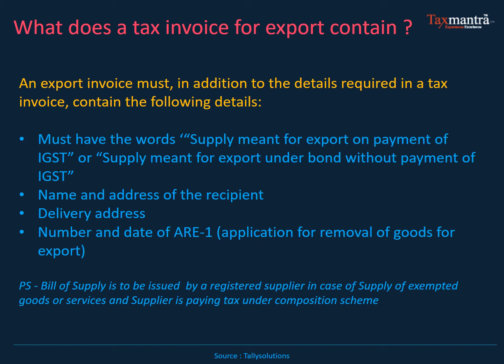For export invoices, the tax invoice must have the words 'supply for export on payment of IGST' or 'supply for export under bond without payment of IGST.' Supply can happen either after payment of IGST, for which you can claim a refund, or without payment of IGST under a bond. The invoice must also include the name and address of the recipient, delivery address, and the number and date of the ARE — that is, Application for Removal of goods.